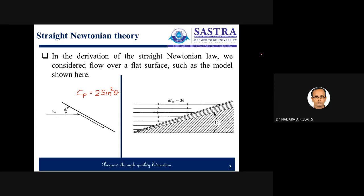We had a discussion where we apply such phenomena: the free stream velocity V-infinity hits the flat plate like a stream of pellets from a shotgun blast, which when striking on the surface would lose all its momentum normal to the surface but would move tangentially to the surface without loss of tangential momentum. We derived Cp equal to 2 sin square theta, and also discussed modified Newtonian theory where Cp equals Cp_max sin square theta.